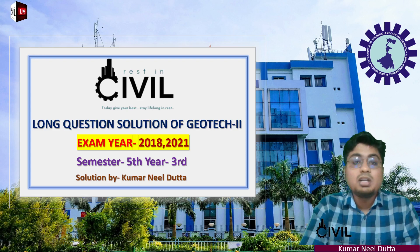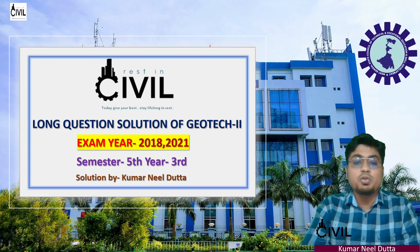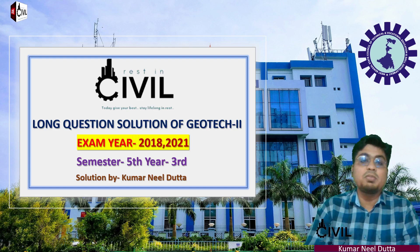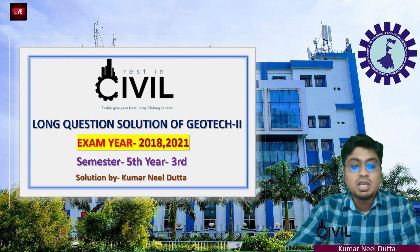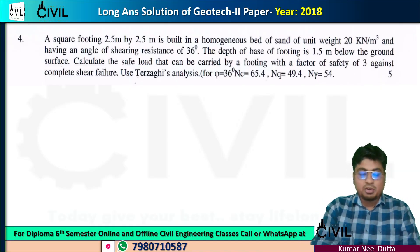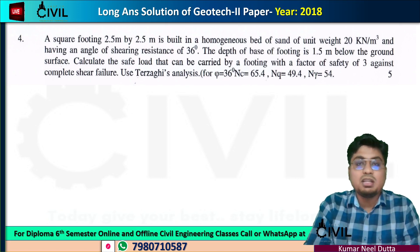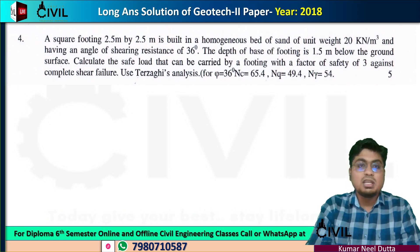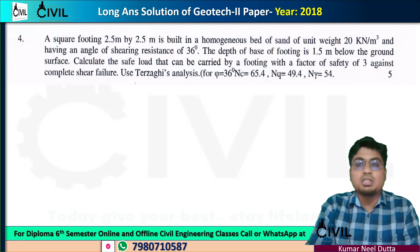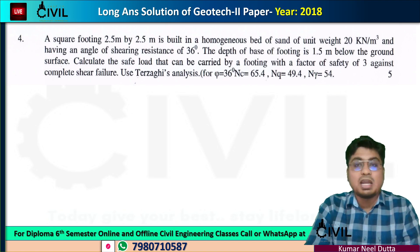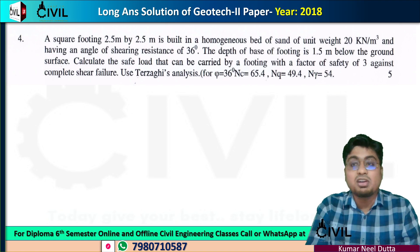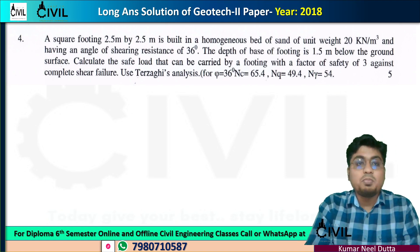Now, if we ask the types of entries, we will ask the questions. The question is from 2088: a footing is built in a homogeneous bed of sand with unit weight, angle of shearing resistance 36 degrees. The depth of the base of the footing below ground level is given. Calculate the safe load that can be carried by the footing with a factor of safety against complete shear failure.